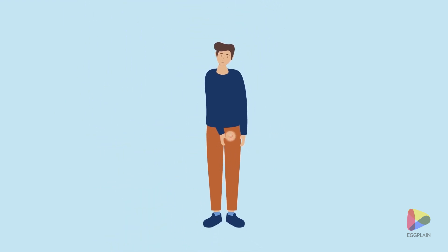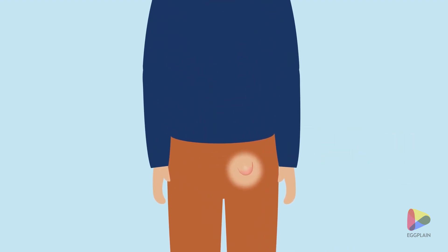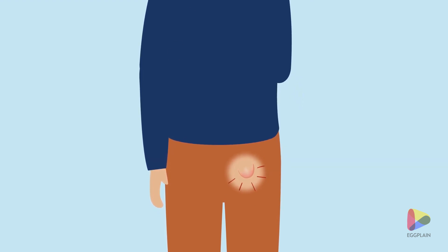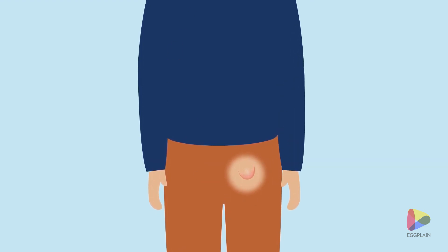If this occurs in the groin area or inside the upper thigh, it is called an inguinal hernia. You will notice a bulge when you exert pressure on the abdomen, for example when coughing or lifting something heavy. In men, the hernia may extend into the scrotum.